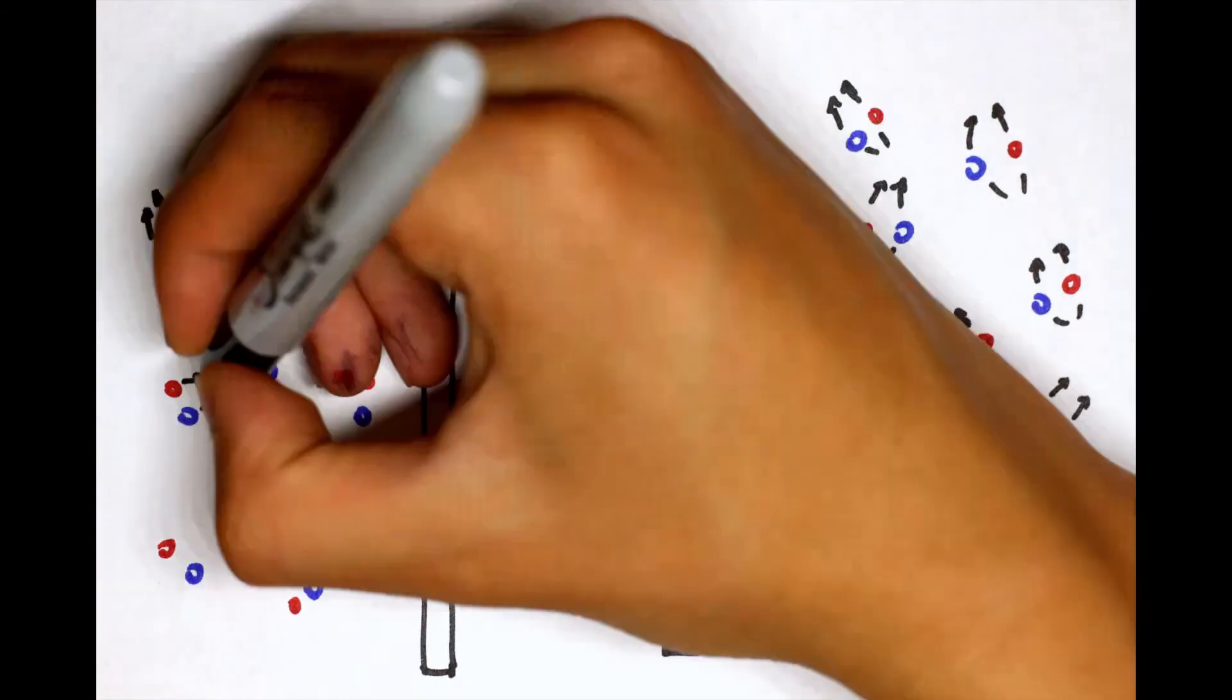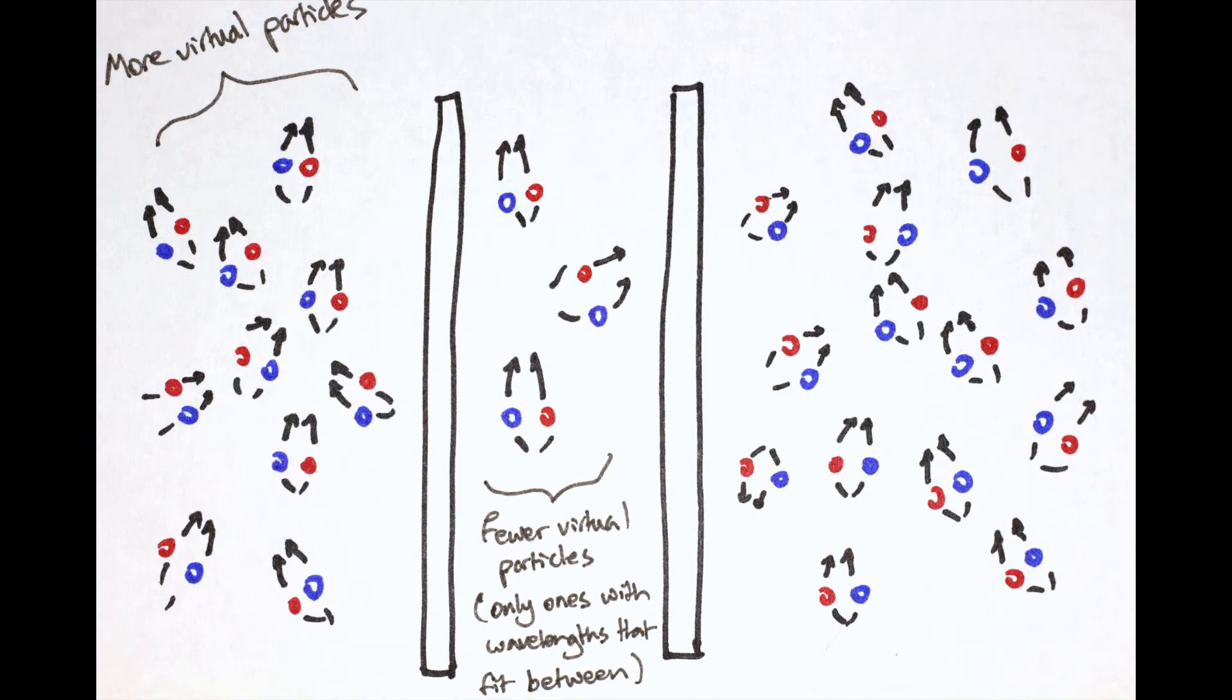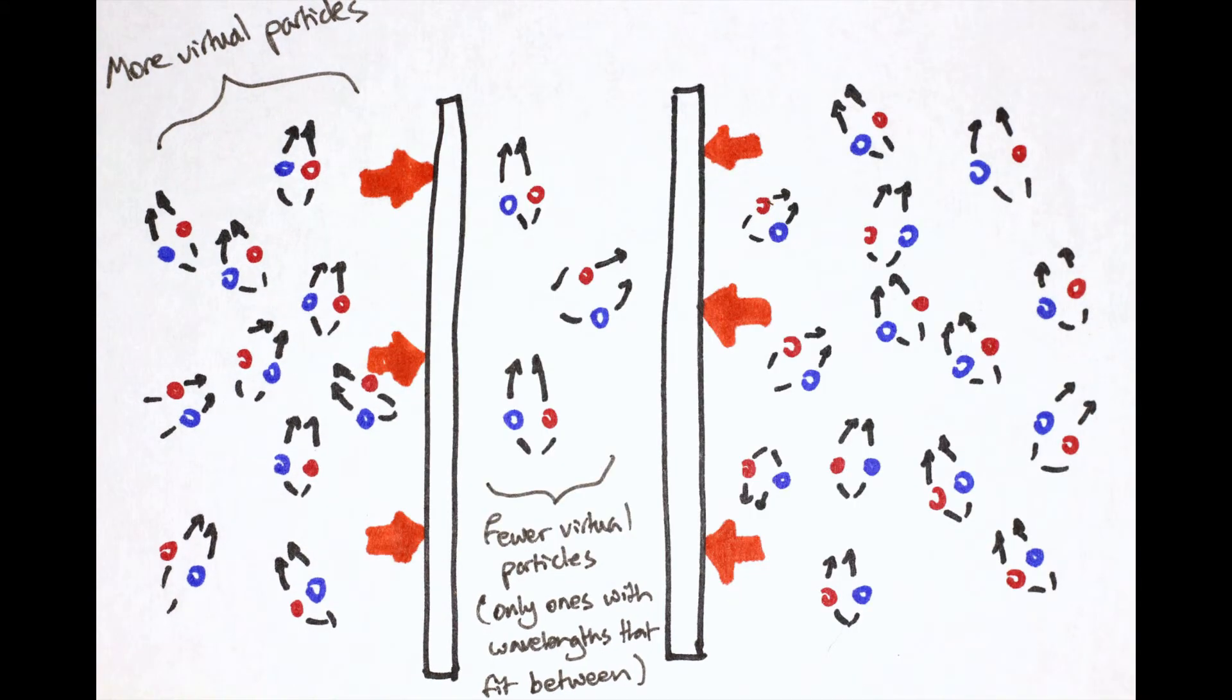And because there are more virtual particles pushing on the plates around the two plates than in between, an overall pressure is exerted on the plates, causing them to move toward each other, a phenomenon known as the Casimir effect.